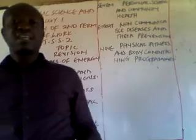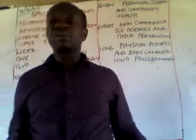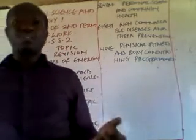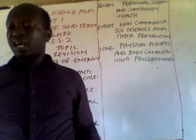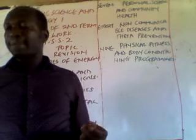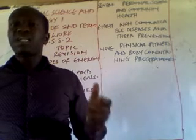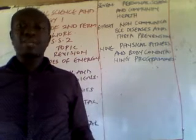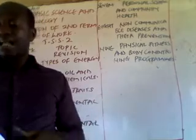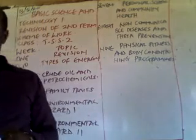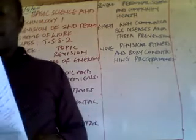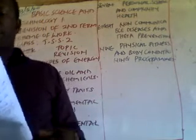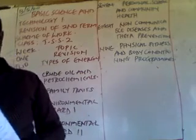Recessive traits include albinism — traits that don't manifest easily in individuals. We also talked about hemophilia, sickle cell anemia, and similar conditions. These are traits regarded as recessive traits. We then talked about the importance of family traits.